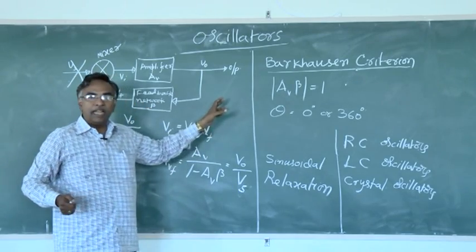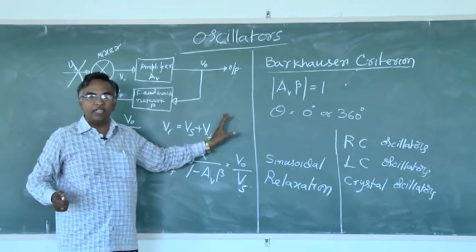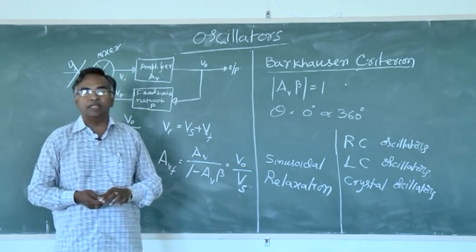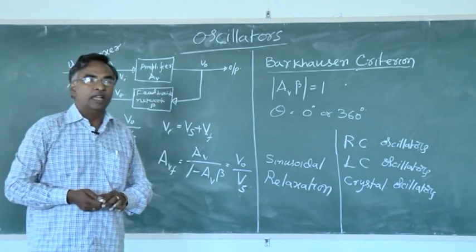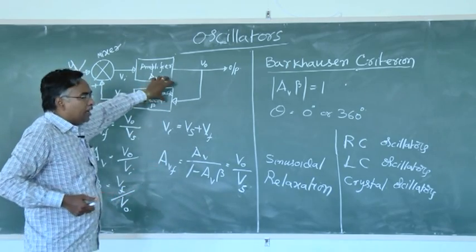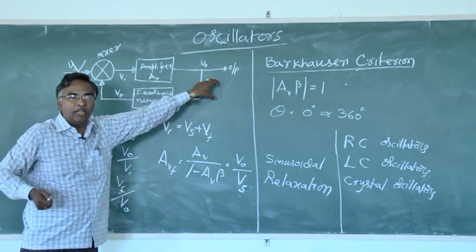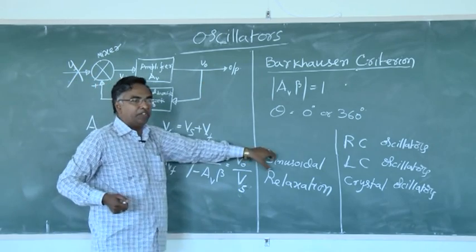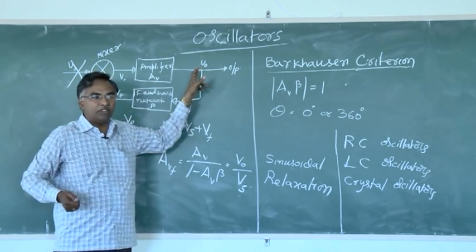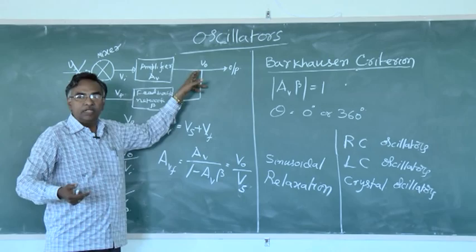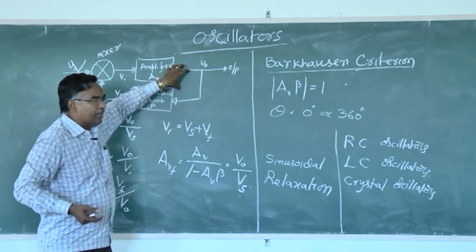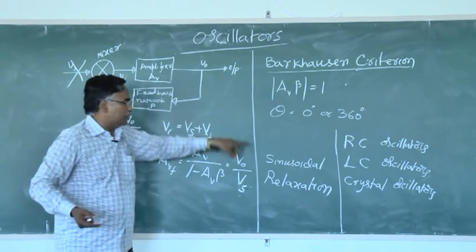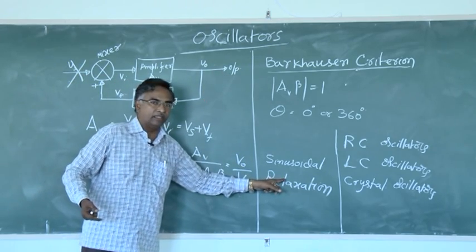Coming to the classification of oscillators, there are two types: one is sinusoidal oscillators and the second is relaxation oscillators. Any oscillator which generates an output signal in the form of a sinusoidal shape is called a sinusoidal oscillator. Any oscillator which generates a signal whose shape is other than sinusoidal is called a relaxation oscillator.